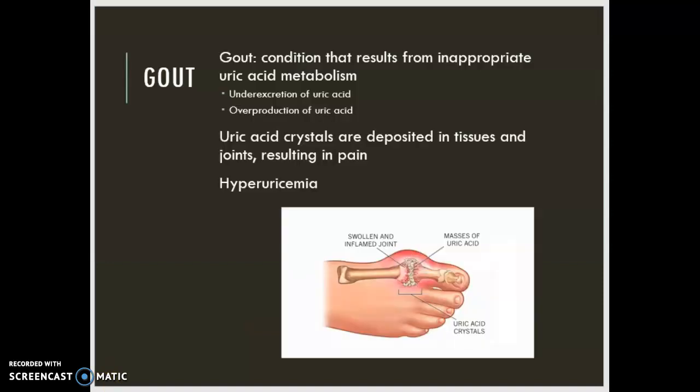What is gout? Gout is a condition that results from inappropriate uric acid metabolism. It's an inflammatory response, and it can be because of an under-excretion of uric acid or an over-production of uric acid. You'll have high levels of uric acid in the blood — that's called hyperuricemia — and also high levels of uric acid in other body fluids, including the synovial fluid.